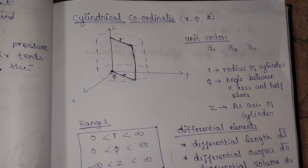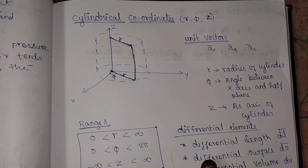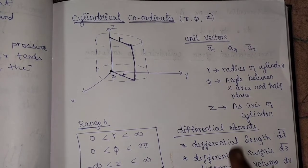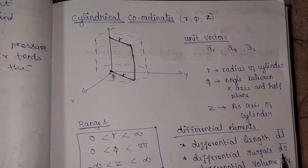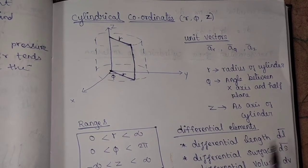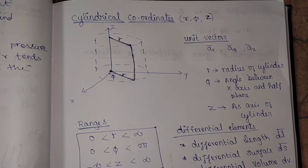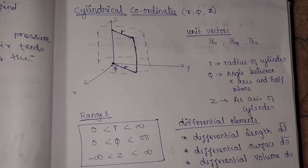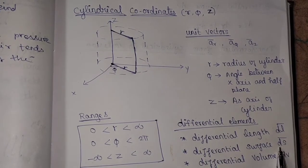In all coordinate systems, the differential elements are very important. The three differential elements are differential length, differential surface, and differential volume. Differential length DL is a vector quantity, and differential surface DS is also a vector quantity. But differential volume DV is a scalar quantity because it is a volume — it does not have any direction.